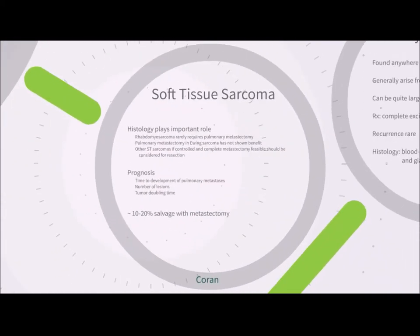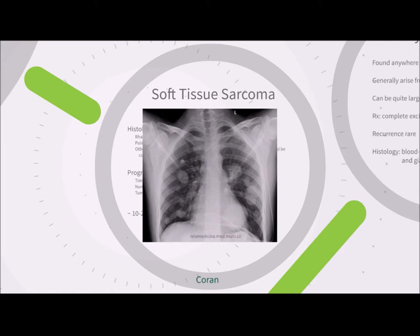For soft tissue sarcoma, benefit from resection depends on the histologic subtype. Pulmonary metastectomy is rarely required in rhabdomyosarcoma. Ewing's sarcoma pulmonary metastectomy has not demonstrated treatment efficacy. For other soft tissue sarcomas, as long as the primary is controlled and complete resection is possible, resection is worth considering. Long-term prognosis is dictated by time to developing pulmonary metastases, number of lesions, and tumor doubling time. Only about 10–20% of patients are salvaged by pulmonary metastectomy. An example of metastatic synovial sarcoma to the lungs is shown on chest x-ray.